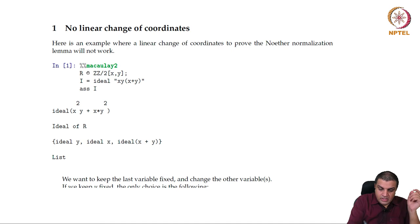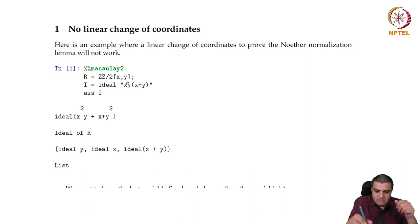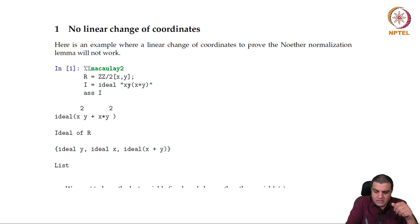We are taking a polynomial ring in two variables over a finite field of two elements, and we look at the ideal generated by x·y and x+y. We ask for its associated primes. This is the Macaulay2 command to compute associated primes. As expected, because these are irreducible elements and distinct primes, if you take a product like this it will not have any other associated primes.